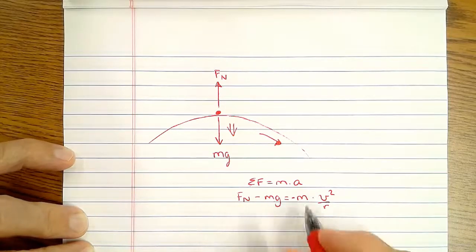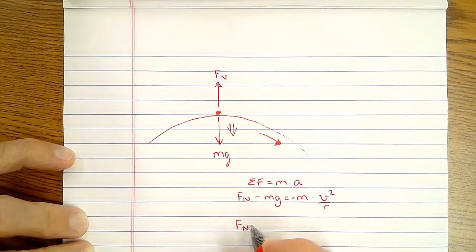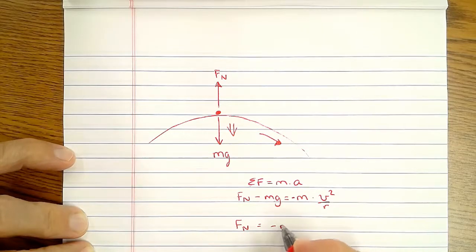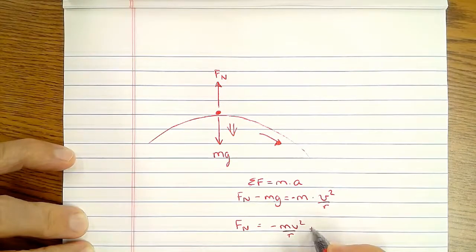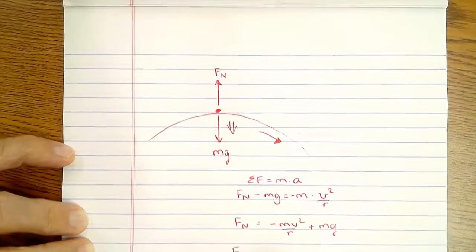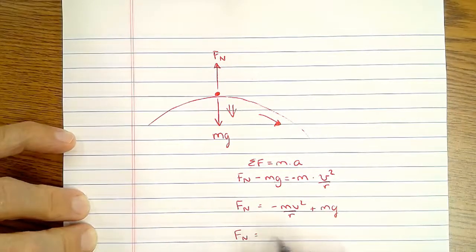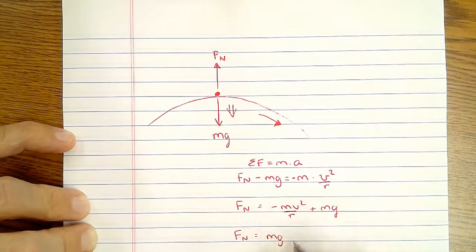That just tells you that the normal force equals minus mv squared over r plus mg, or another way to write that is like this. The normal force equals mg minus the centripetal force.